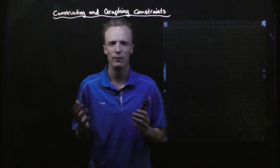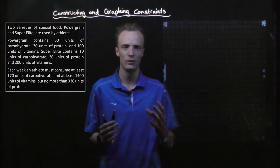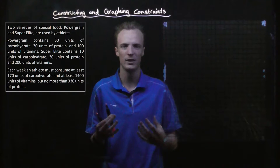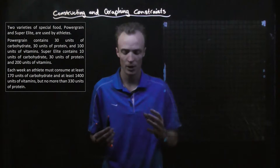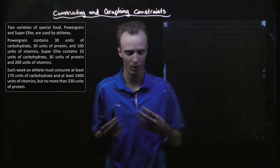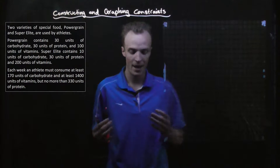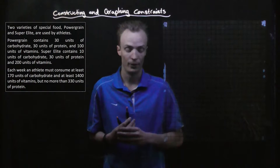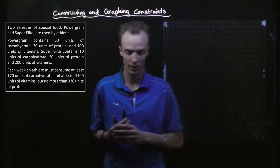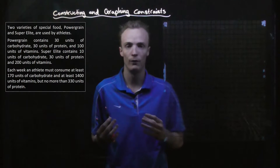For example, if I have the problem here where I'm an athlete and I've got a choice of two different brands of food to consume each week. Let's pretend that Power Grain contains 30 units of carbohydrates, 30 units of protein, and 100 units of vitamins. And let's pretend that Super Elite contains 10 units of carbohydrates, 30 units of protein, and 200 units of vitamins.